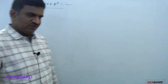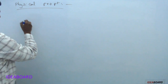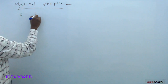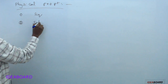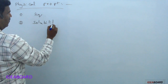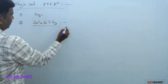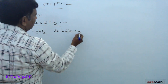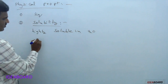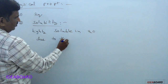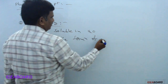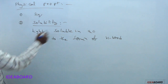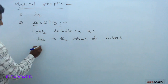The next topic is physical properties of alcohols. First point: all alcohols are liquids. Regarding solubility, alcohols are highly soluble in water due to the formation of intermolecular hydrogen bonds with water molecules.